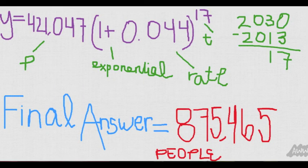In 2030, the population of Williamson County will be 875,465 people.